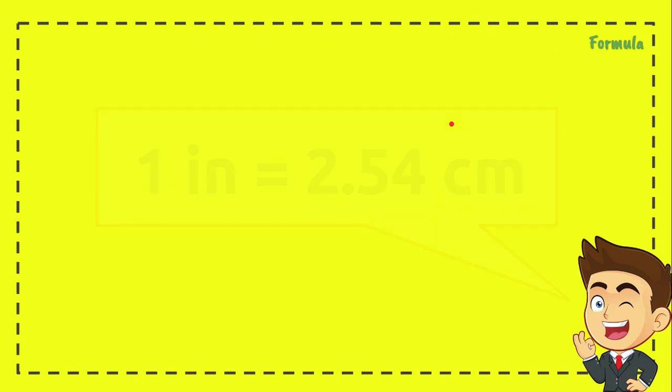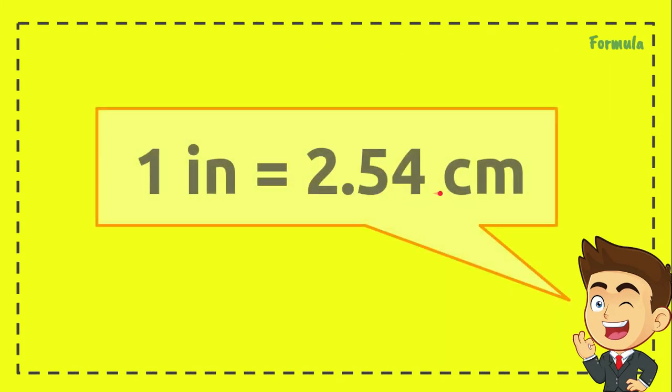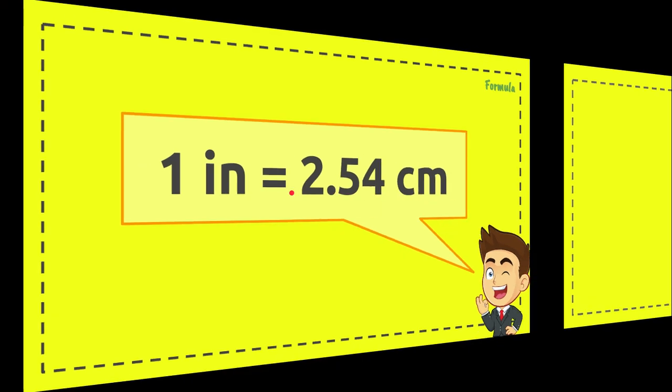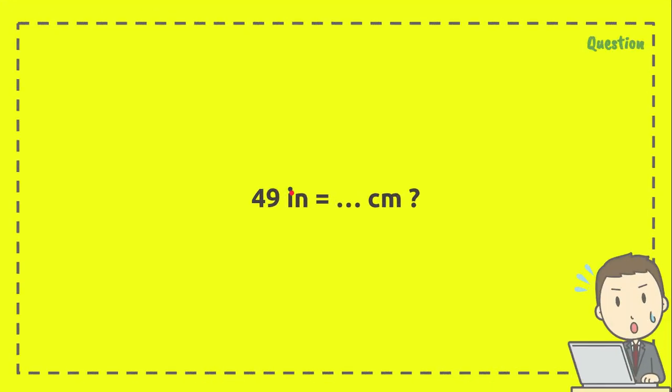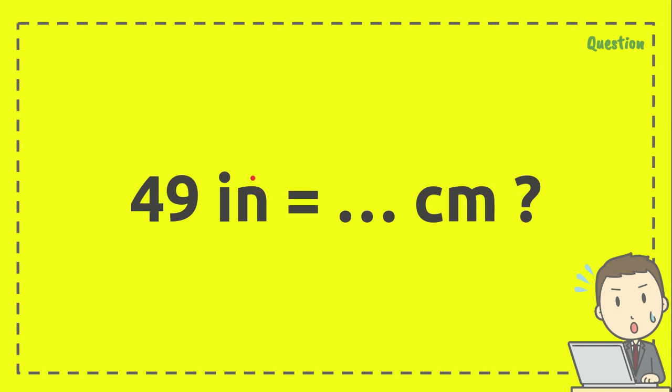Now we're going to have this formula in order to solve the problem. The formula, or you can call it the conversion factor, is 1 inch equals 2.54 centimeters. The question is: 49 inches equals how many centimeters?